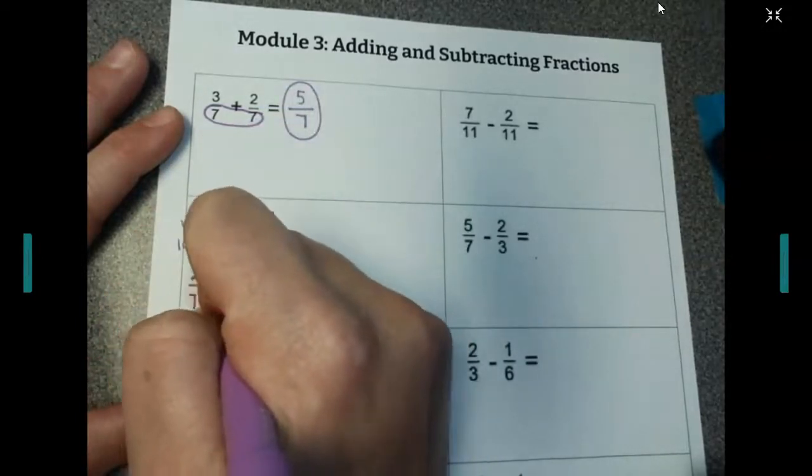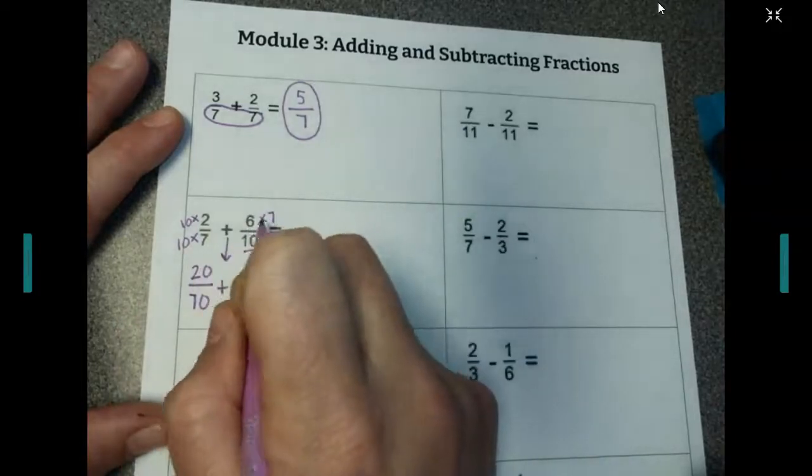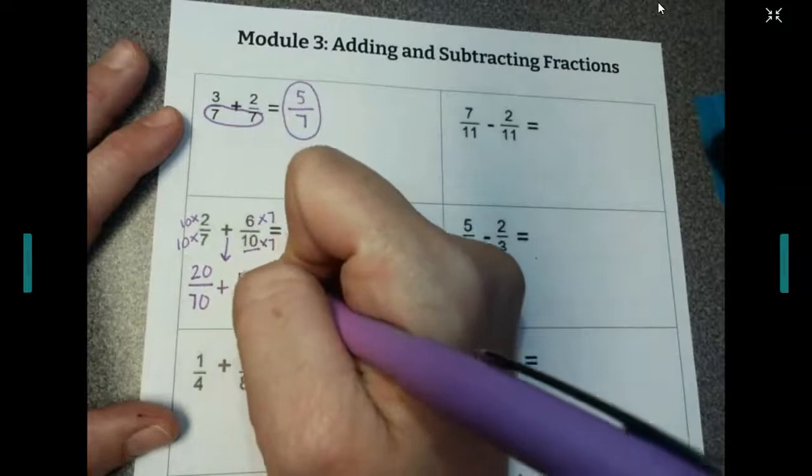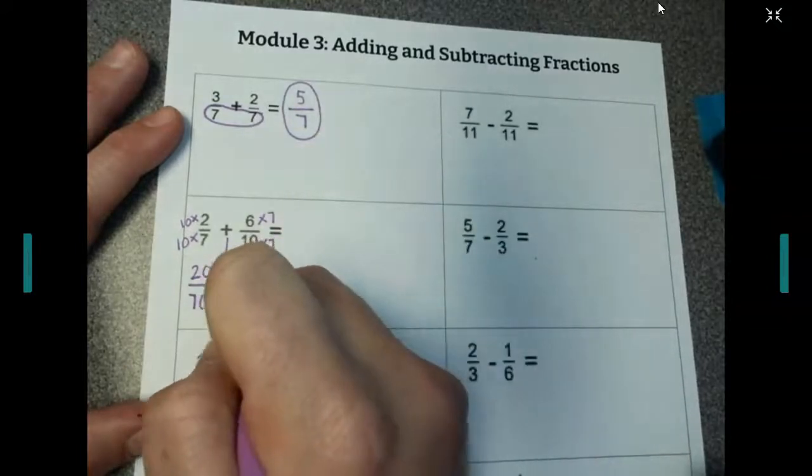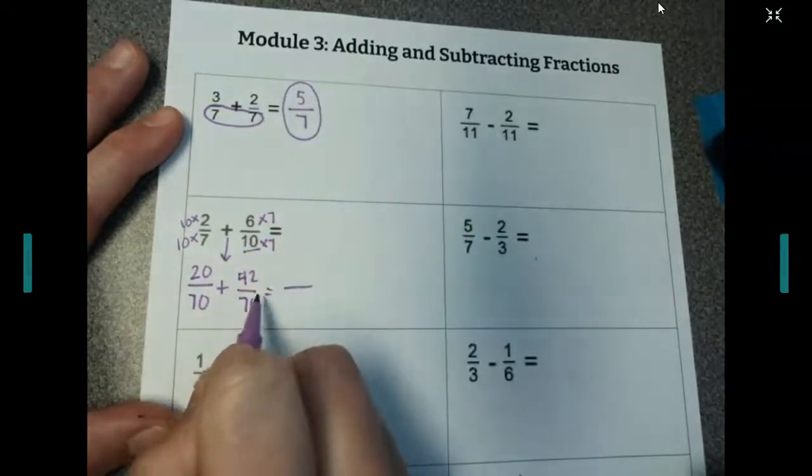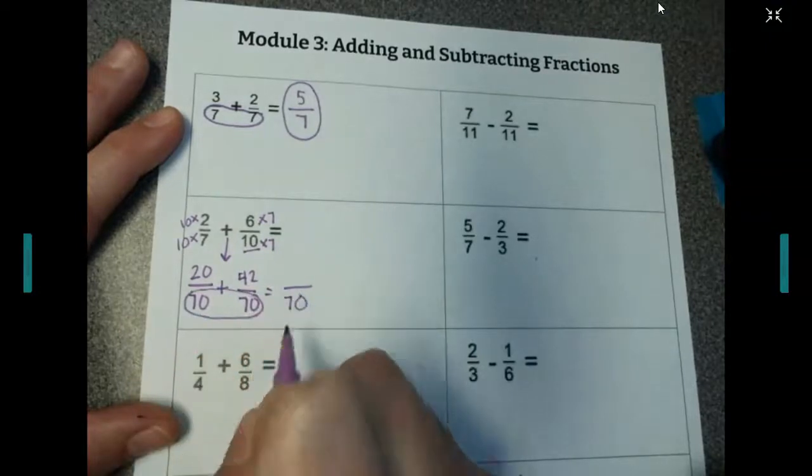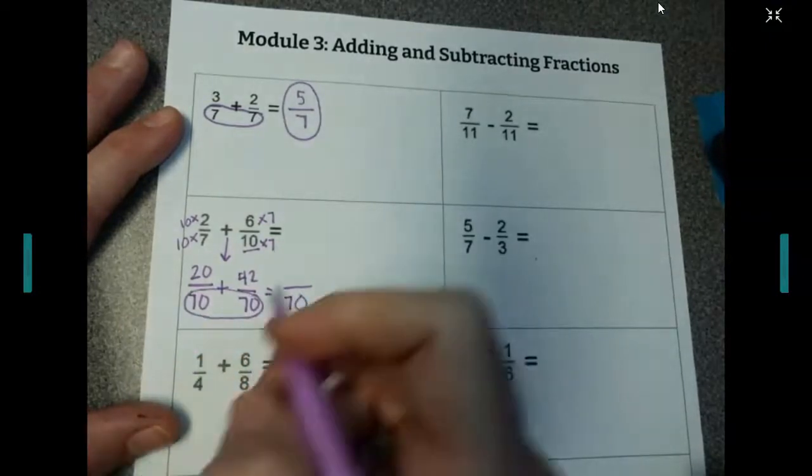We're going to bring our addition sign down. That doesn't change. 6 times 7 is 42, and 10 times 7 is 70. Our bottom number is the same, so it just comes straight over. And 20 plus 42 is 62.